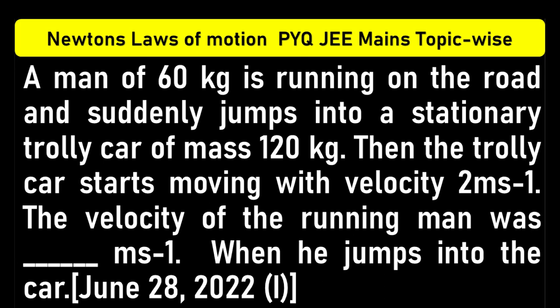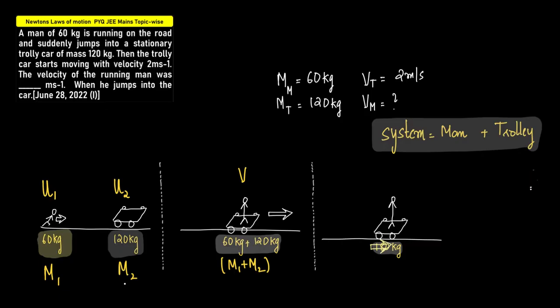Let us first visualize the given condition. Let us assume that this is the man and trolley. The initial velocity is u1 and the initial velocity of trolley is u2. 60 kg weight for the man, 120 for the trolley car. The trolley car starts moving with velocity 2 meters per second, so it starts moving with velocity equal to 2 meters per second.